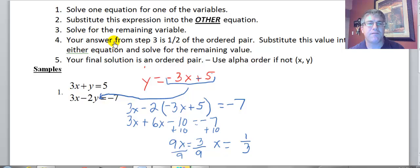So I have found, in step 3, I found half of the ordered pair. I found X will be 1 third. Now I'm going to substitute this value into either equation and solve for the remaining value. Well, I want to find out what Y is, right?